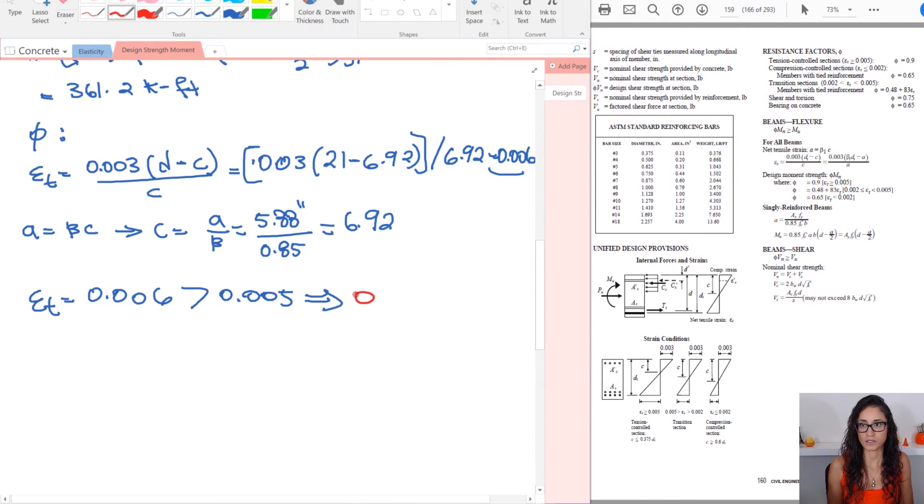So my phi MN is going to be 0.9 multiplied by 361.2 kips feet. And this should give you an answer of 325.08 kips feet.